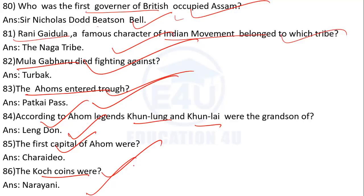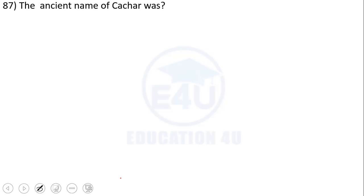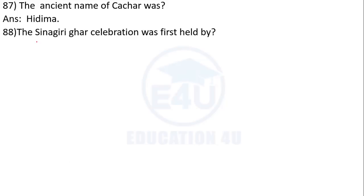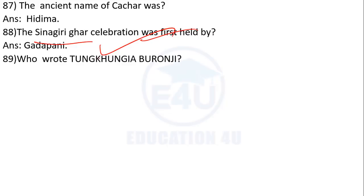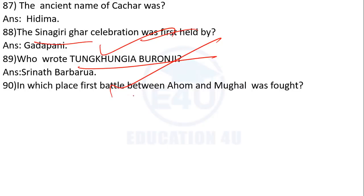What were Koch coins called? Their name was Narayani. The ancient name of Assam was Hidimba (or Pragjyotishpur). The Sinagari Ghar celebration was first celebrated during the time of Gaudapani. The Tungkhunia Buranji was first written by Shrinath Barbari.